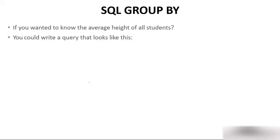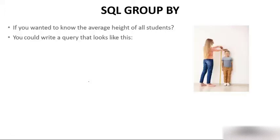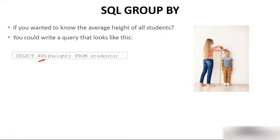So, SQL GROUP BY. If you wanted to know the average height of all students, like this teacher taking the height of all students, you could write a query that looks like this: SELECT average height FROM student. The average is an aggregate function, and we have a separate video for aggregate functions. What's happening here is we're selecting the average height from the students table, where height is a column. Suppose a student table has 60 students — you will get the average height of those 60 students.